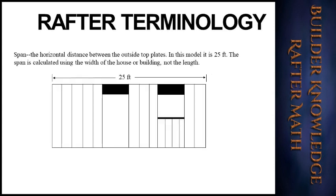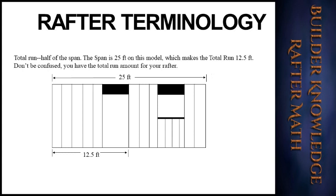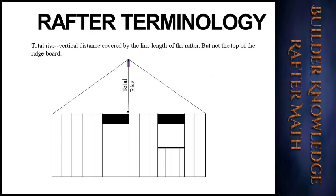The span is the horizontal distance between the outside top plates. In this model it is 25 feet. The span is calculated using the width of the house or building, not the length. The total run is half of the span — the span is 25 feet on this model, which makes the total run 12.5 feet. Don't be confused between span and total run.